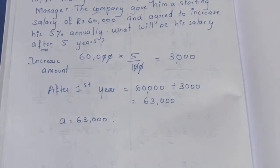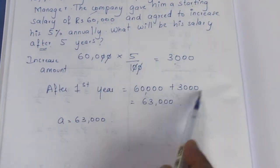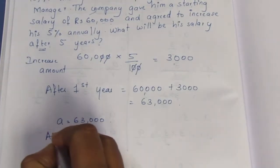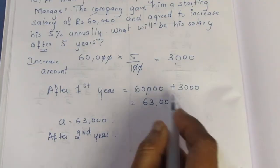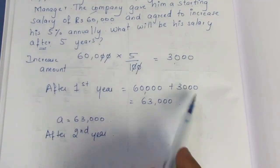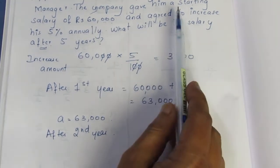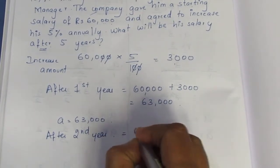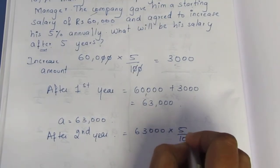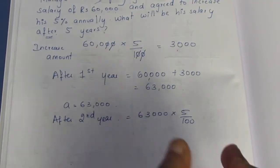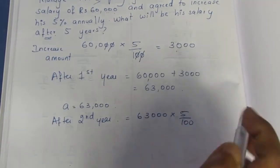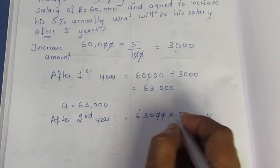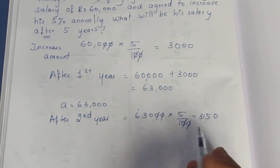For the 2nd year, we multiply the 2nd year amount by 5%. Every time, the increase is 5% annually. So 63,000 into 5% — cancelling zeros, 5 times 3 is 15, 5 times 6 is 30 plus 1 is 31, giving an increase of 3,150. This is a GP.